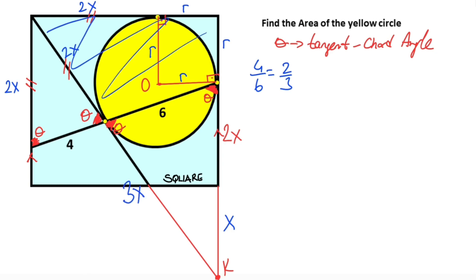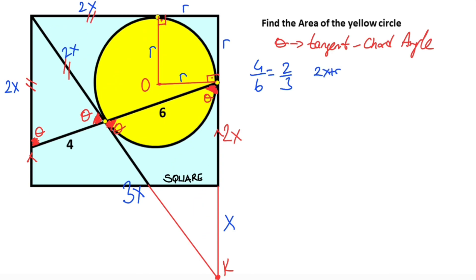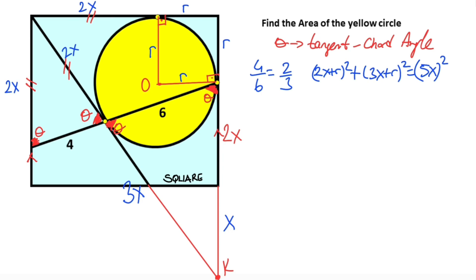If we focus on the biggest triangle, we can apply the Pythagorean theorem: two x plus r, whole squared, plus three x plus r, whole squared, equals five x whole squared. So expanding: four x squared plus four xr plus r squared plus nine x squared plus six xr plus r squared equals twenty-five x squared.